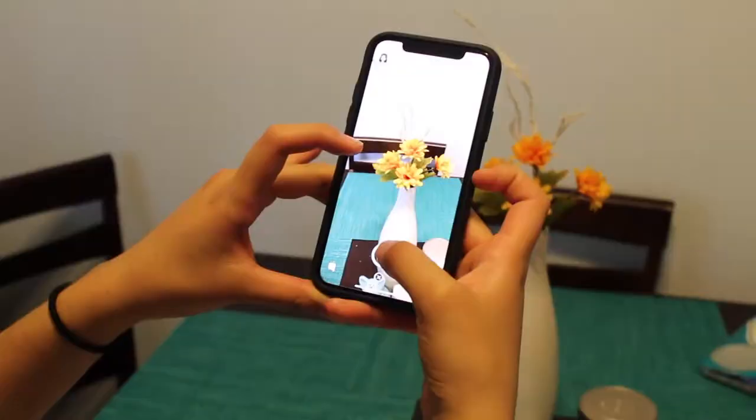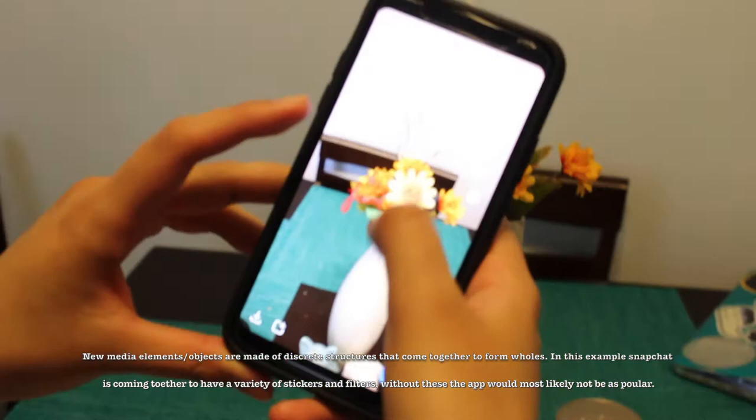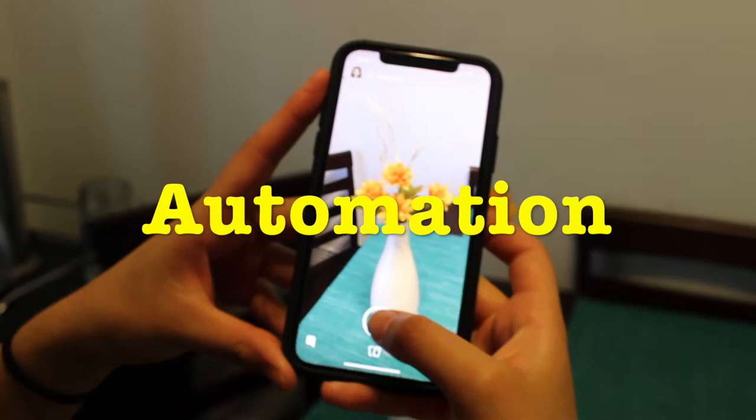New media elements and objects are made of discrete structures that come together to form wholes. In this example, Snapchat is coming together to have a variety of stickers and filters. Without them, the app wouldn't be as popular.